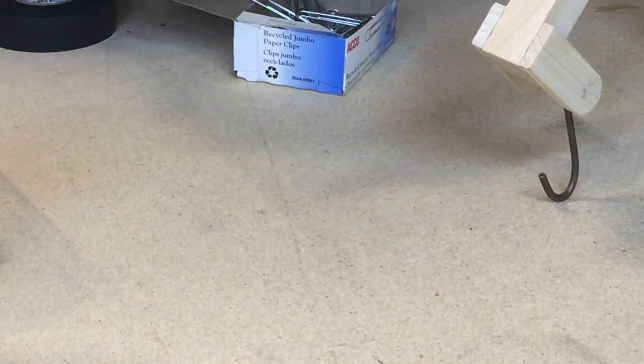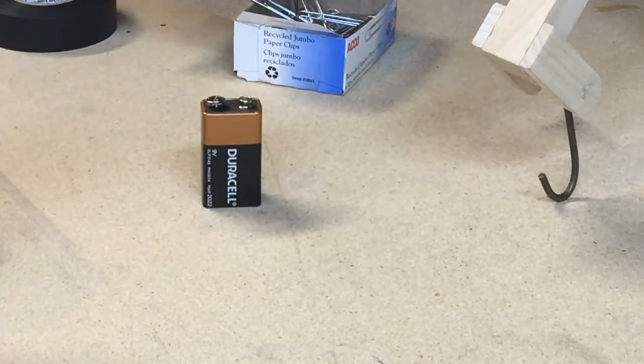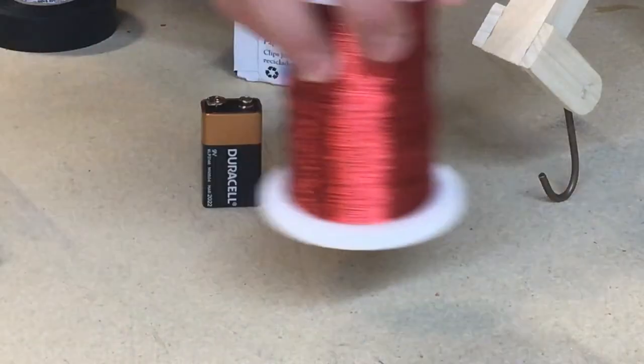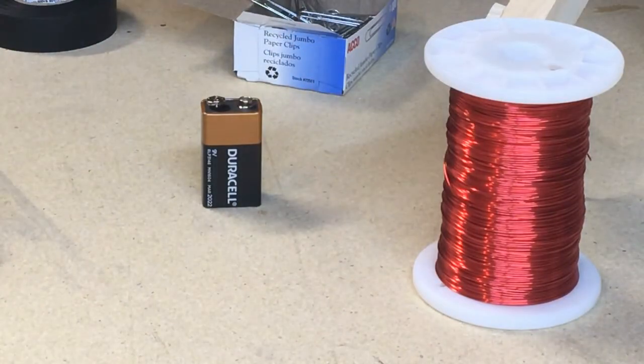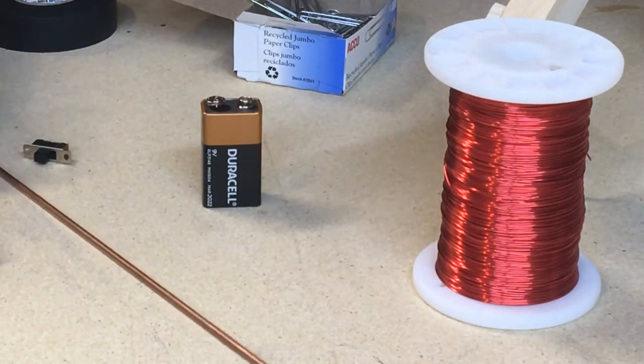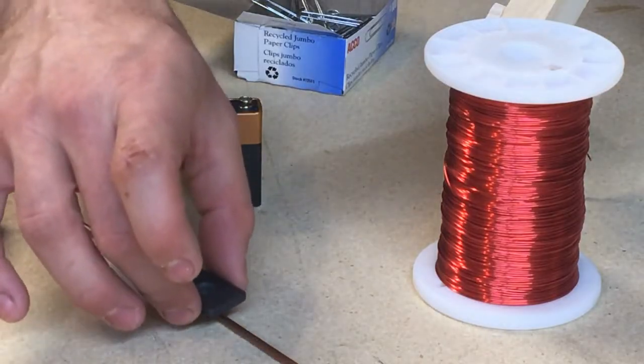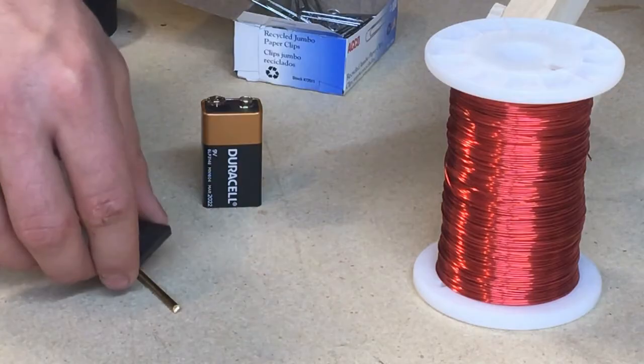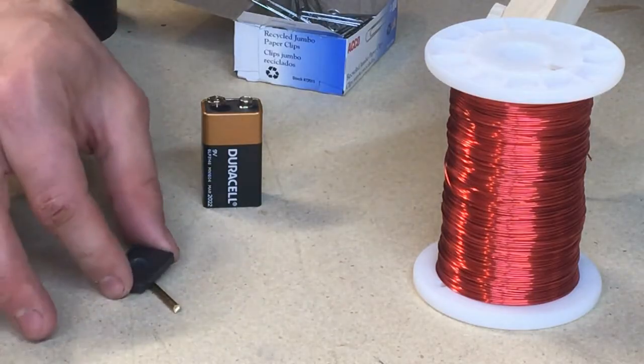Our electromagnets will be powered by a battery, supplying a specific amount of electricity. So to increase the strength of the electromagnet, we will need to increase the number of coils. We'll coil the wire around a copper rod, which is a substance that would typically be attracted to a magnet. A different material, like brass, would not work for this because brass is not attracted to a magnet.